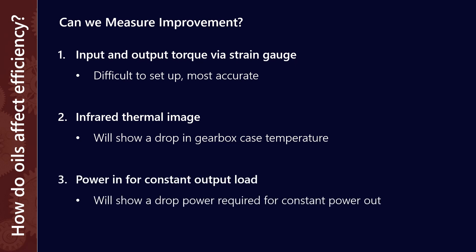The last way is to look at the power in for a constant output load. As an example, if the gearbox is being driven by an electric motor, we could measure the current being drawn by the electric motor for a fixed output power. With a synthetic lubricant, you would expect a lower input current for a fixed output torque. So these are the ways that we can physically confirm that a lower traction lubricant or a lower viscosity lubricant is in fact giving us energy efficiency savings.